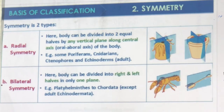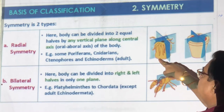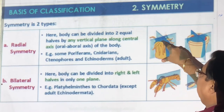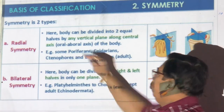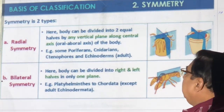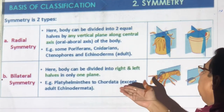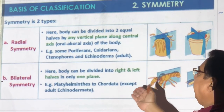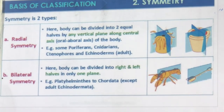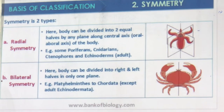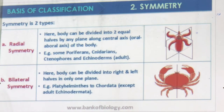Radially symmetric animals use the oral-aboral axis — they cannot have head and tail. Bilateral animals are higher animals that can be cut into left and right halves. All animals from Platyhelminthes to Chordata are bilaterally symmetric, except Echinodermata which are radial. You can see radial symmetry and bilateral symmetry illustrated here.